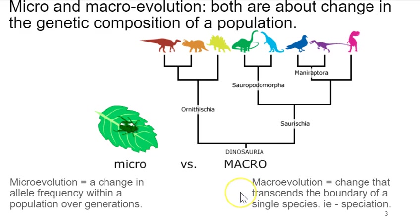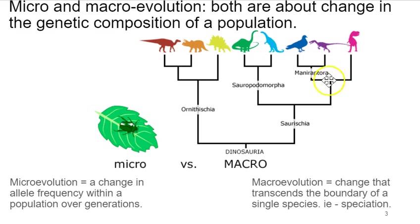Macroevolution essentially means that microevolution has gone on for a while and has been significant enough that we've actually had speciation events — the kind of evolutionary change where you get birds distinguished from their dinosaur ancestors.